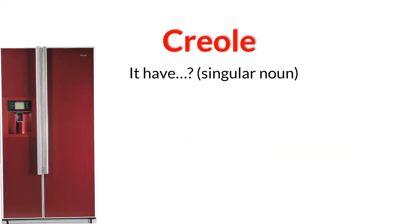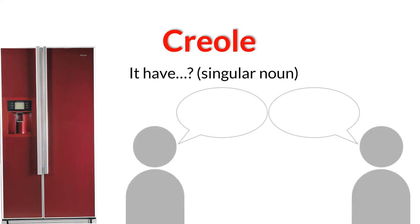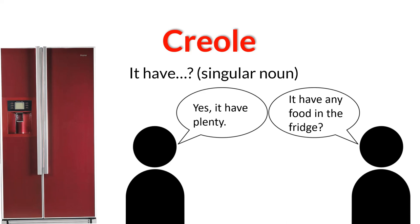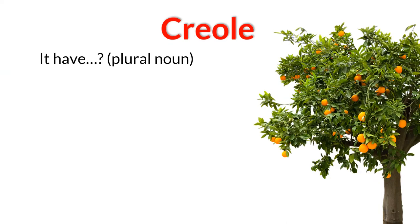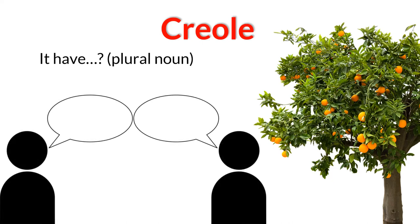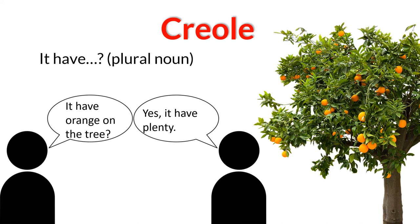"It have" is also used to ask a question about something's existence. For example, Brandon might ask Marie, "it have any food in the fridge?" and she might reply, "yes, it have plenty." In the Creole, we also use "it have" to ask about the existence of many things. So Brandon might ask Marie, "it have orange on the tree?" Notice he is asking about the existence of many oranges, but uses the word "orange" — because in Trinidad Creole, plural nouns aren't always marked by the letter S.